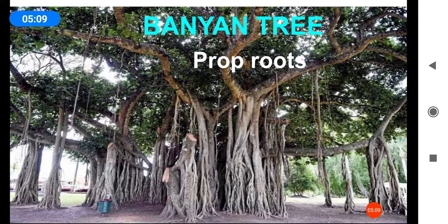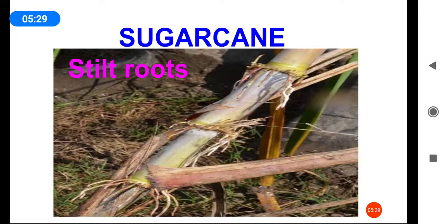The first type of modified root is prop root. In the banyan tree, roots grow vertically from horizontal branches of the tree — these roots from the branches are prop roots and give support to the tree. Next, stilt roots in sugarcane and maize. These are adventitious roots that arise from the nodes in a cluster at the base of the stem. These stilt roots arise from the nodes.